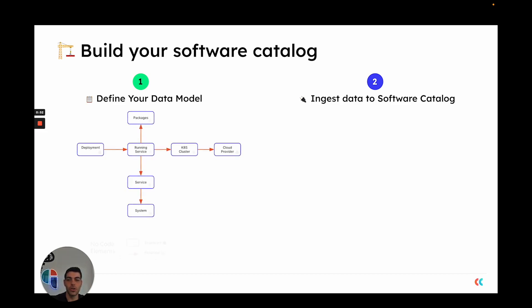In order to define your data model, Port provides you with a variety of no-code elements — we call these blueprints and relations. A blueprint represents an asset in your catalog and infrastructure — that could be a deployment, a package, a service, a Kubernetes cluster, a cloud provider, and so on. Relations allow you to create connections between those different assets and actually create a dependency graph that gives you a good overview of which elements you have in your software catalog and how they relate to one another.